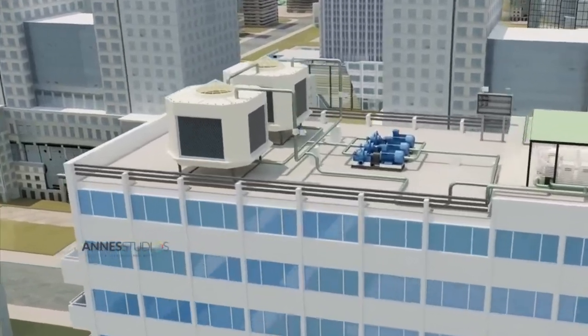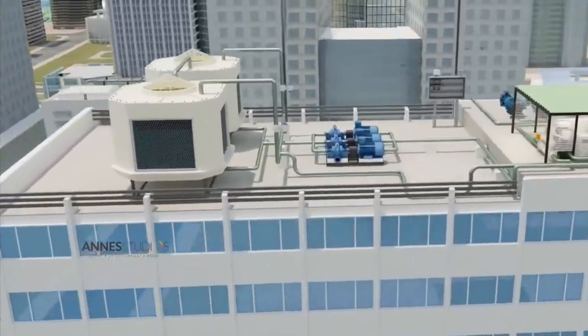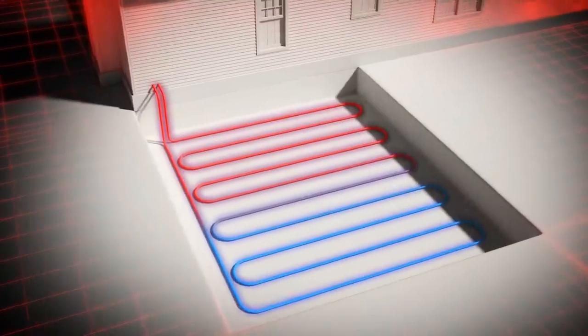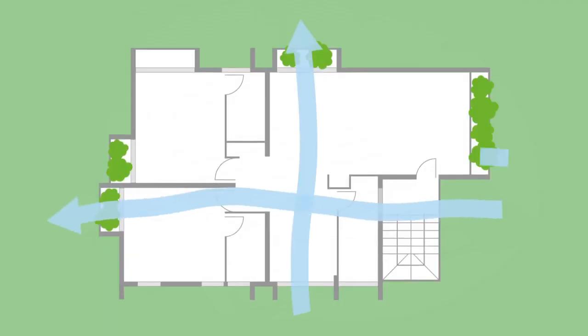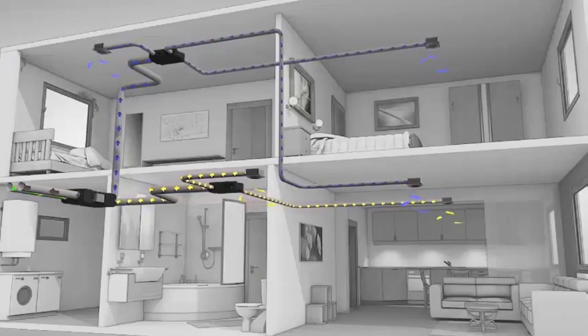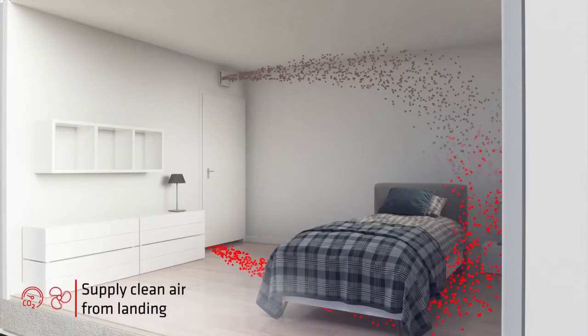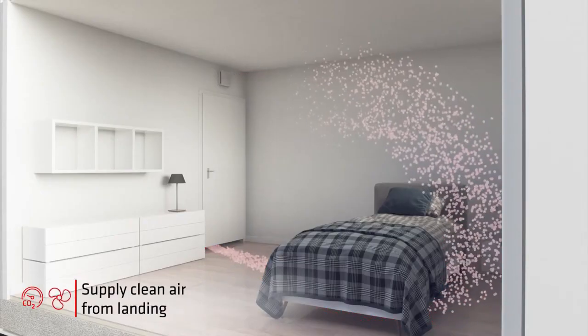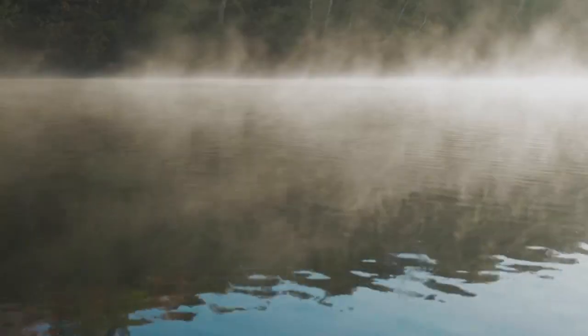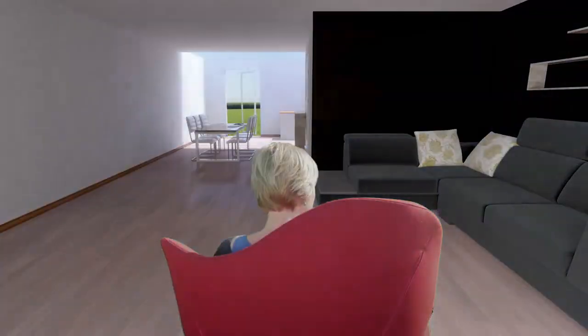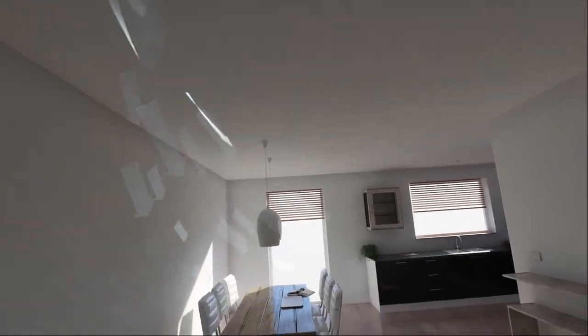HVAC Utility Construction System, or Heating, Ventilation, and Air Conditioning Systems, provides comfortable indoor environments by regulating temperature, humidity, purity, and air circulation in a building.